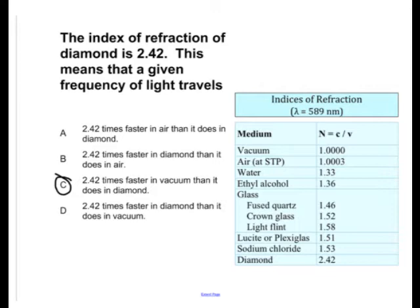Rearranging this equation, we get the velocity is equal to c over n. So let's use the mediums vacuum and diamond for this particular problem.